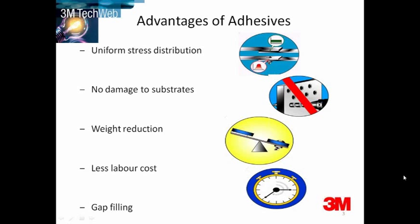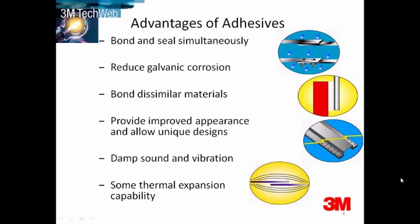Gap filling can be very important for substrates which are not the same, such as dissimilar materials, and also the modern trend of composite bonding. It enables bonding and sealing simultaneously. It can help reduce galvanic corrosion, which is very important in the automotive and electronic industries.